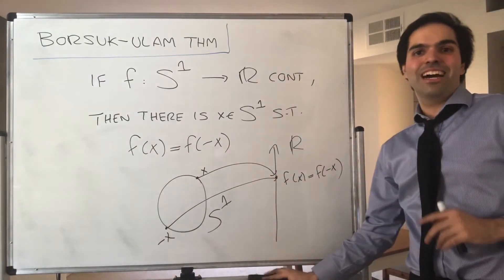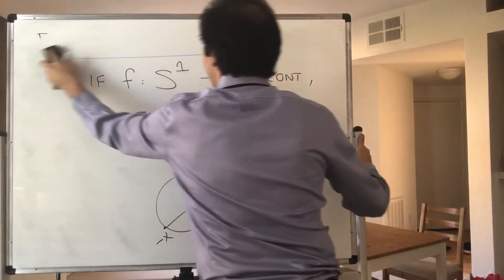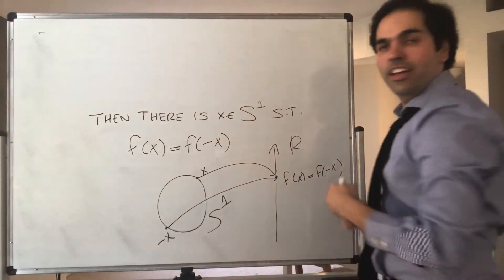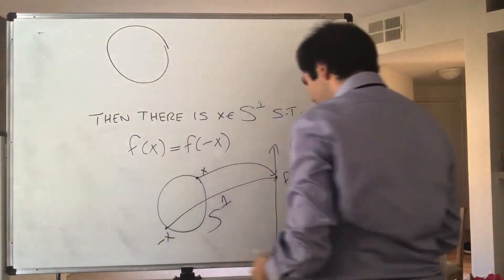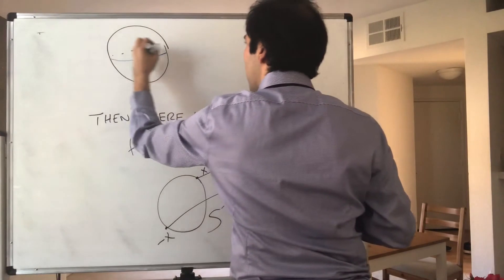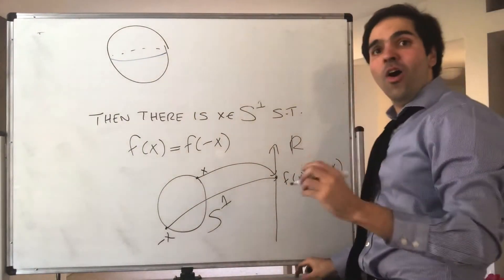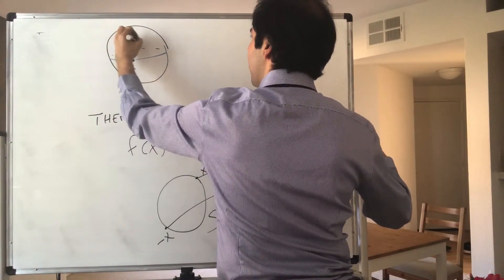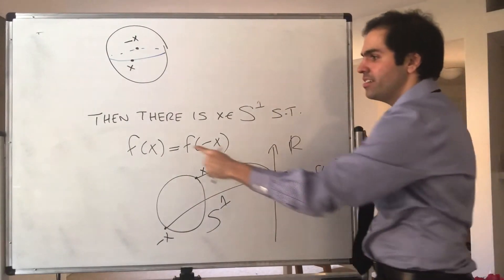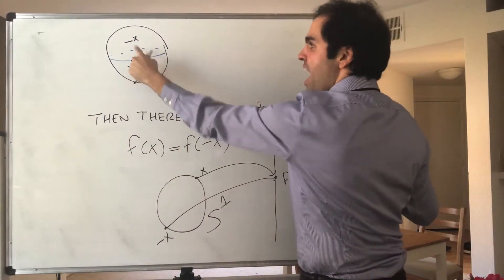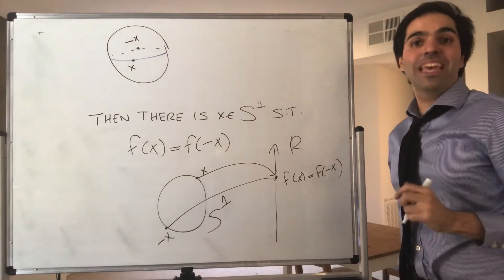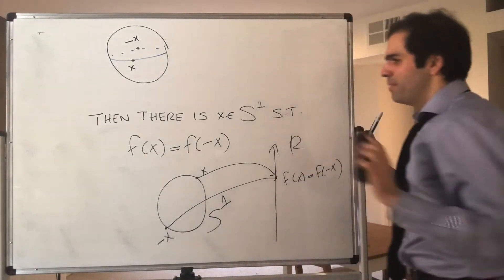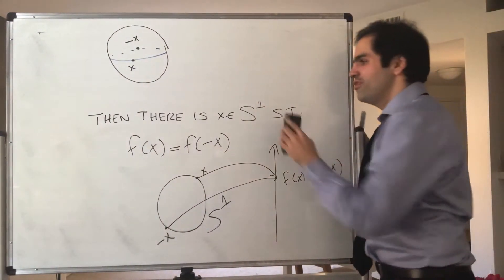There's this amazing application that a student of mine told me about. He just said, consider Earth. There's a reason why we'll talk about Earth. The Earth has an equator. And what this is saying is there are two antipodal points on the equator, x and minus x, whose temperature is the same. Because if you take f to be the temperature, then there are x and minus x with the same value of f. And we'll see there's some more amazing stuff happening afterwards. But before I do that, let me prove this.